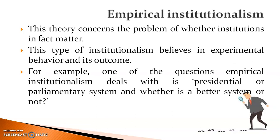Empirical institutionalism concerns the problem of whether institutions actually matter, because it believes more in experimental work. This type of institution believes in experimental behavior and its outcomes — they generally try to do something based on their own understanding, and based on the outcome they decide what has to be done and whether a particular path should be followed, remaining flexible to change if the desired outcome is not gained. For example, one question empirical institutionalism deals with is whether a presidential or parliamentary system is better, experimenting with different approaches and changing views accordingly.